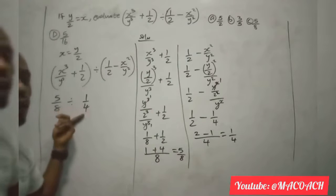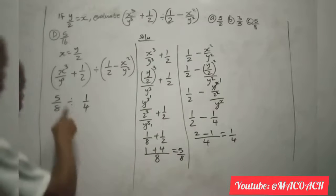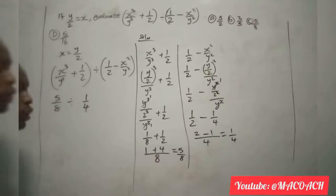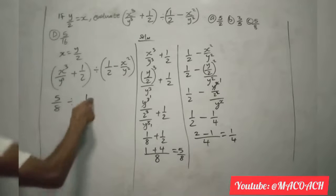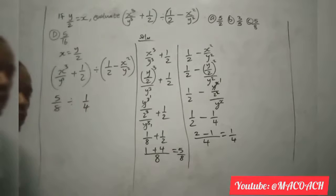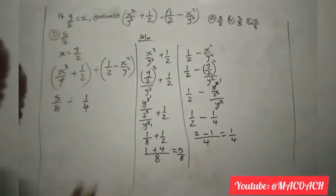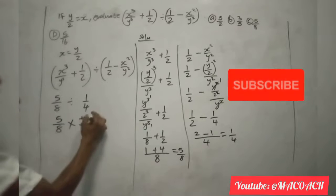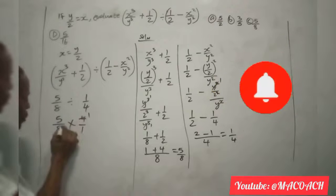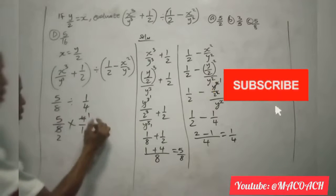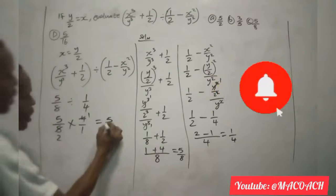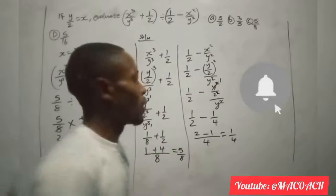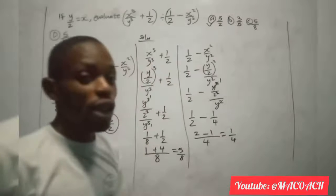Now we combine: we have 5 over 8 divided by 1 over 4. Division becomes multiplication and the second fraction inverts to 4 over 1. So 5 over 8 multiplied by 4 over 1. Here 4 and 8 share a common factor: 4 divided by 4 is 1, 8 divided by 4 is 2. So we have 5 times 1 divided by 2 times 1, which equals 5 over 2. Our answer is 5 over 2, which is option B.